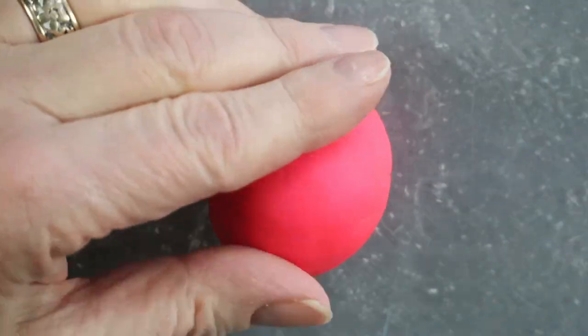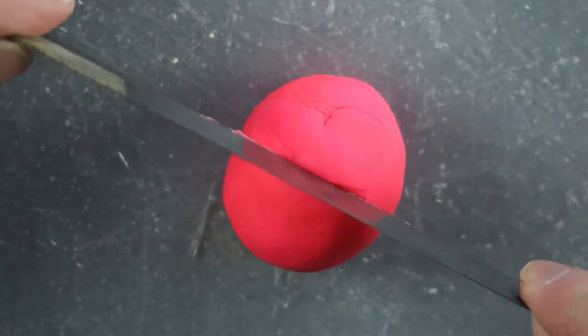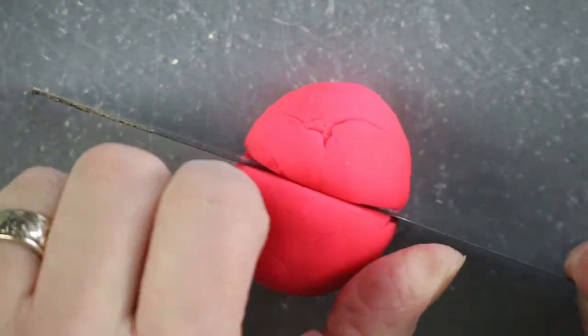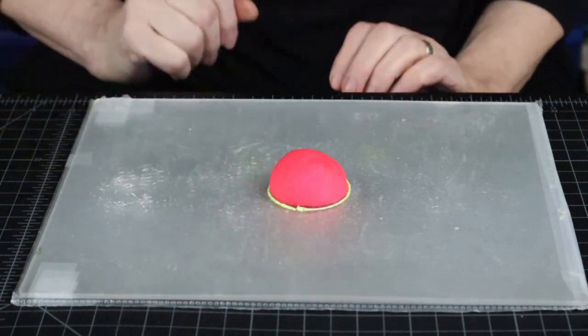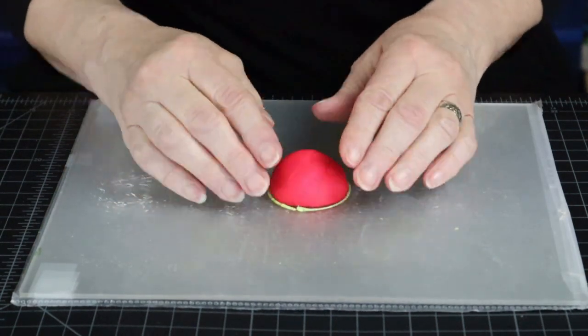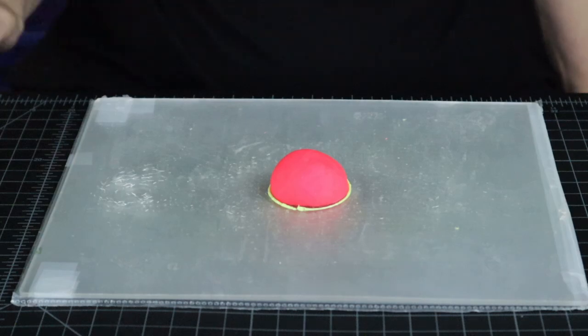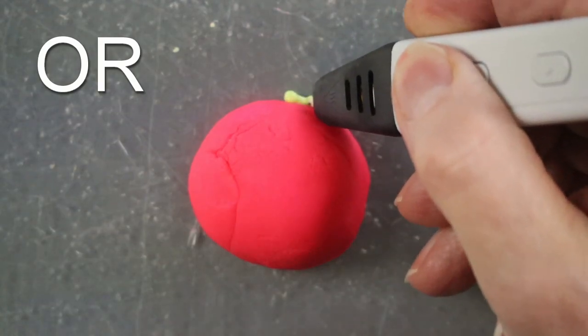If only we could trace the whole thing this easily. Well, there's nothing stopping us. We can put half of our clay ball into the circle, or better yet, just trace the ball.